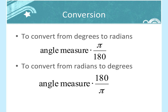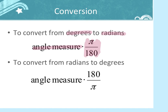To convert between radians and degrees: going from degrees to radians, take your angle and multiply by π/180. Going from radians to degrees, take your angle and multiply by 180/π.